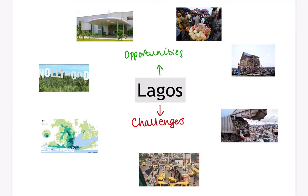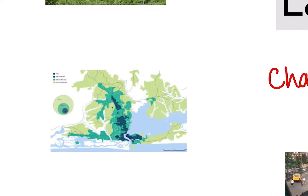This video will talk you through Lagos, which is an example of a city in an LIC or NEE that has regional, national and international importance, experiences urban growth and as a result has opportunities and challenges. The first thing to consider is why Lagos has regional, national and international importance. In the 1970s Lagos experienced an oil boom, which brought huge amounts of investment and created a financial and industrial centre within Lagos.